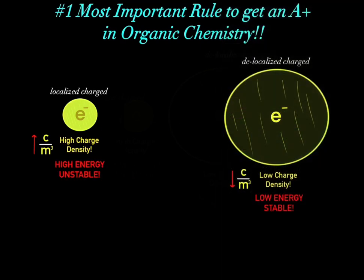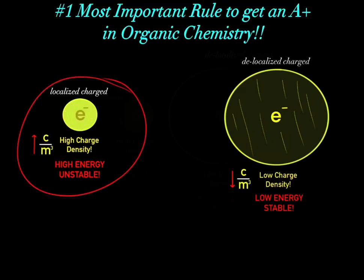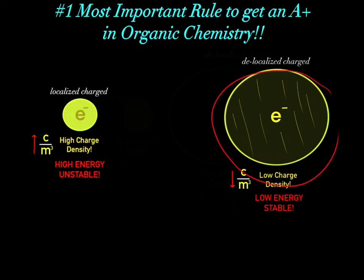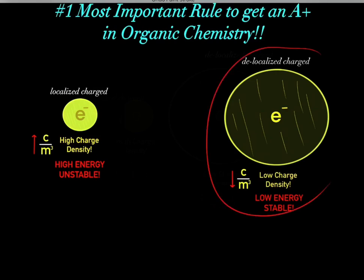The most important rule you need to know for organic chemistry is this: high charge density — having a very densely charged region of space — is high in energy and very unstable. However, low charge density, having delocalized charge, is low in energy and very stable.